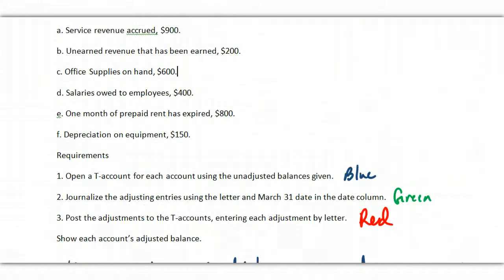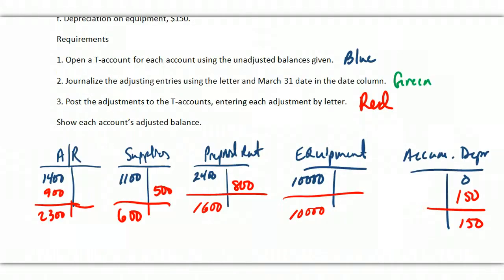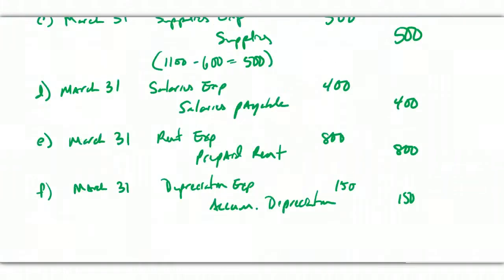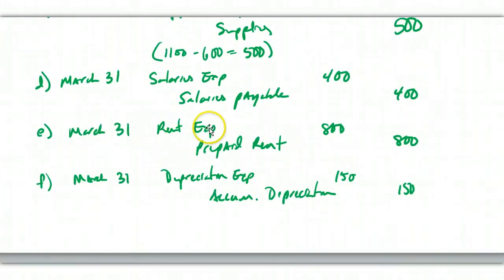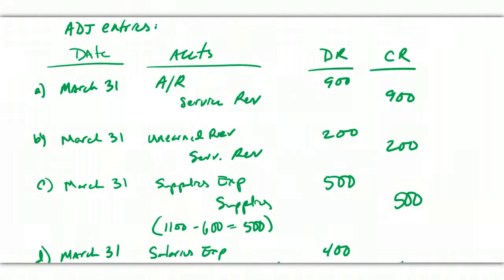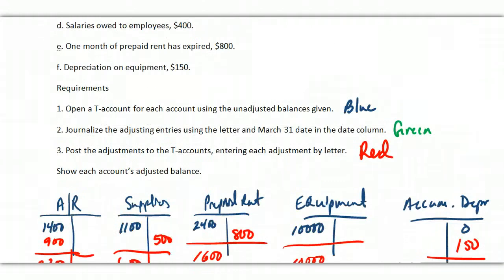Hope you're not getting too dizzy going back and forth here. One month of prepaid rent has expired. So I debit rent expense. I credit prepaid rent. Let's try that again. I debit rent expense. I credit prepaid rent for $800.